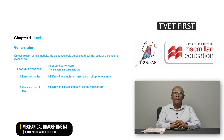What has it been replaced with? The new Module 1 now deals with linkages. Students must be able to draw the locus of a point on a mechanism with up to four arms.